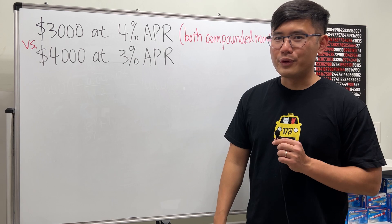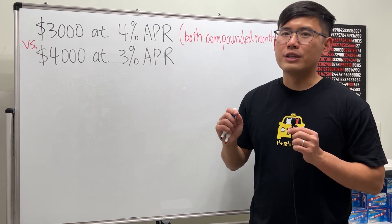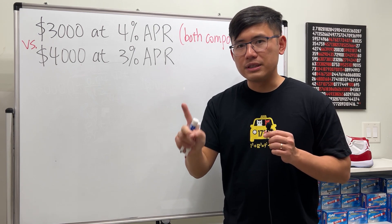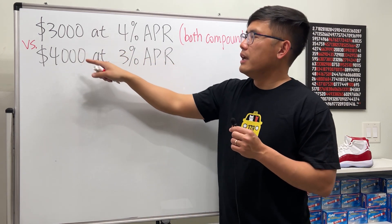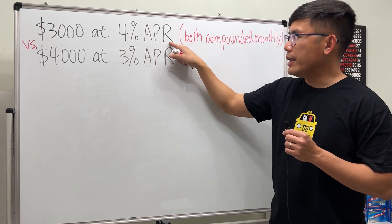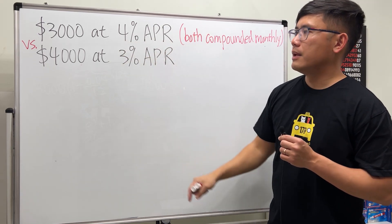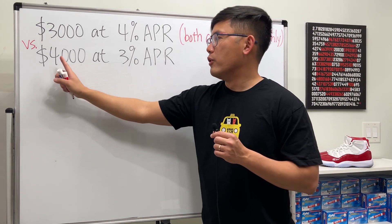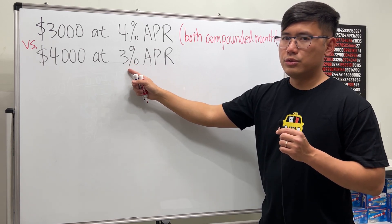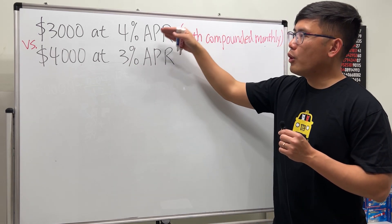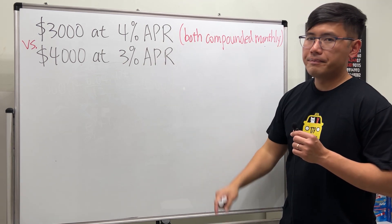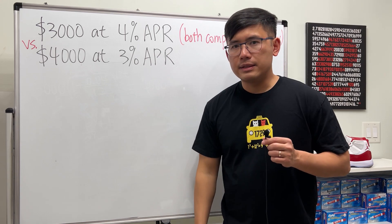Okay, I have a very interesting question for you guys about the compound interest formula. Check this out. Let's say I'm going to give you two options. Option one is I will give you $3,000 at 4% annual percentage rate. Option two, I will give you more principal, $4,000, but I will lower the interest rate a little bit, just 3%.